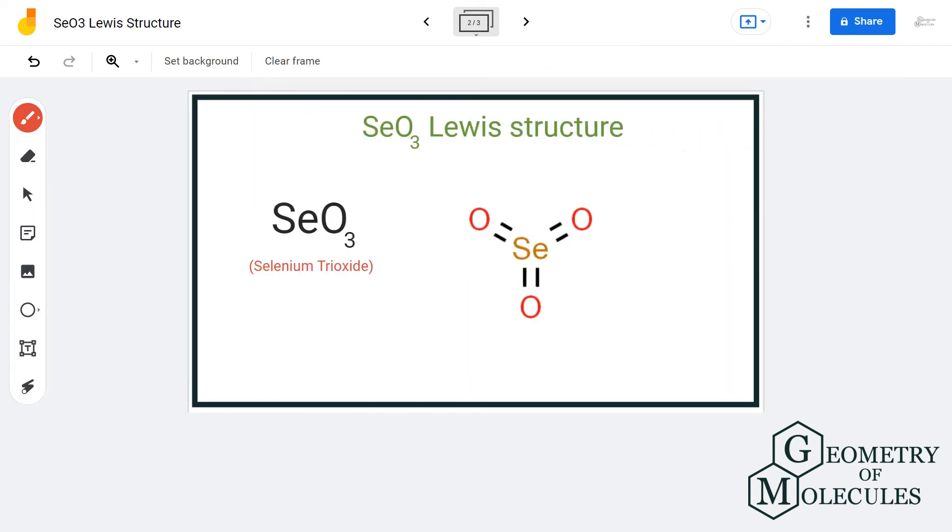This is the Lewis structure of SeO3, in which the selenium atom forms double bonds with three oxygen atoms.